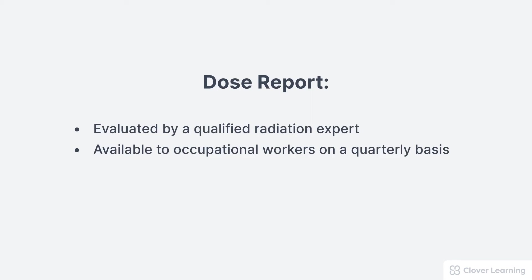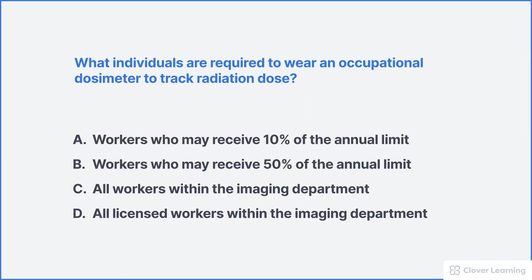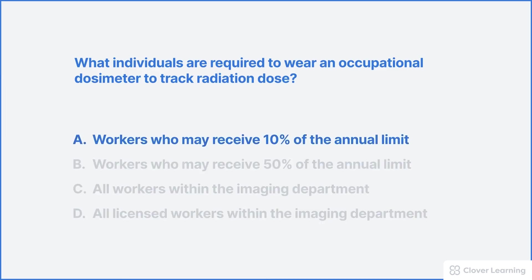That's an overview of occupational dosimetry. Let's try a quick practice question: what individuals are required to wear an occupational dosimeter to track radiation dose? The correct answer is A — workers who may receive 10% of the annual limit must wear a personal dosimeter.